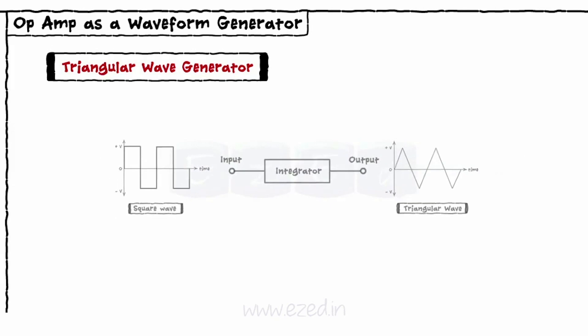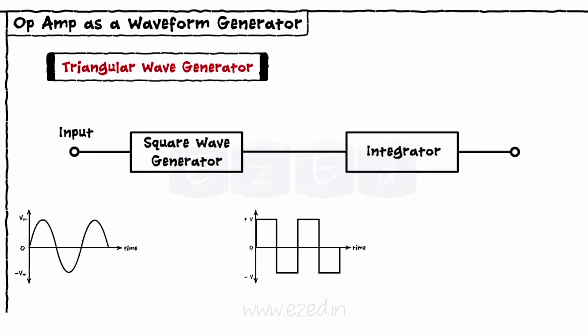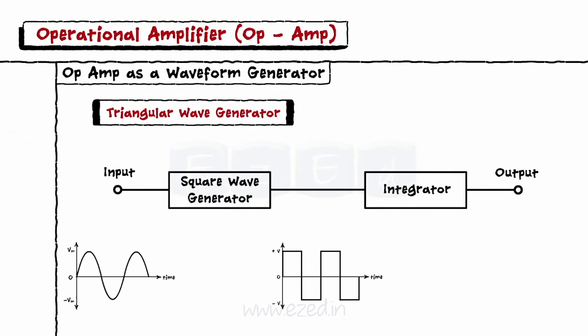Thus, to construct a triangular wave generator, we combine two circuits such as a square wave generator, followed by an integrator as shown. And at the output of an integrator, we get a triangular signal.